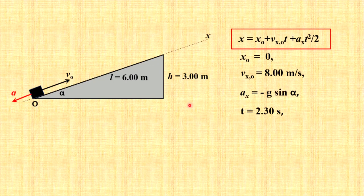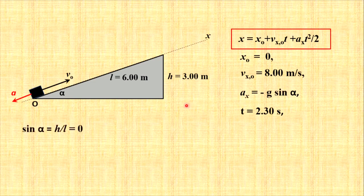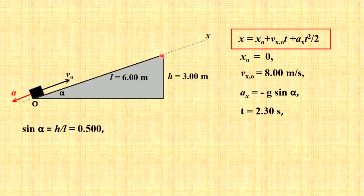To find sine alpha, we use the geometry. We have a right triangle, and sine alpha is just the ratio of h to l, and this ratio in our case is equal 0.5. So angle is 30 degrees, but actually we need only the sine of this angle.